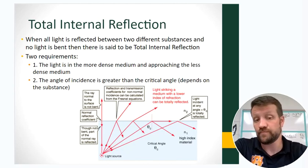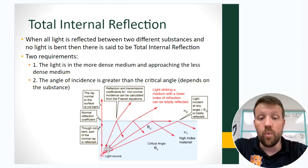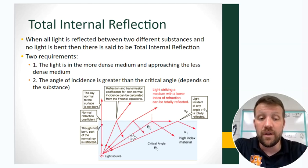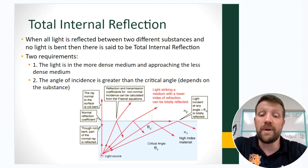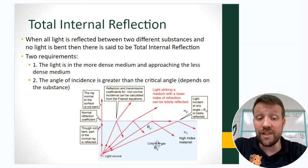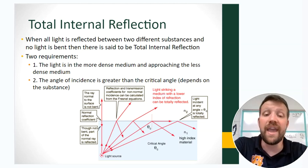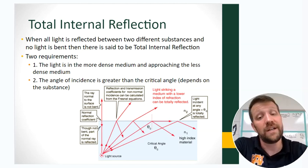Total internal reflection occurs when light is in a more dense medium approaching a less dense medium — a requirement. This doesn't happen from air into water; only from water up toward air. The angle of incidence must be greater than the critical angle, defined based on the substance. At that critical angle, you get reflection along the surface between two media — that's total internal reflection. We'll do a quick lab with that.